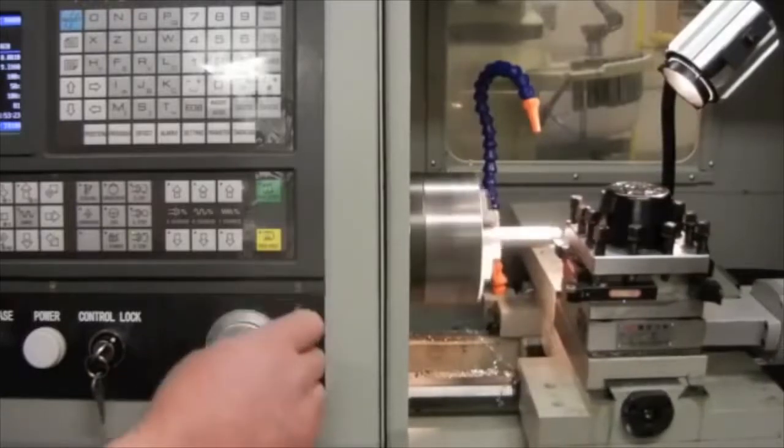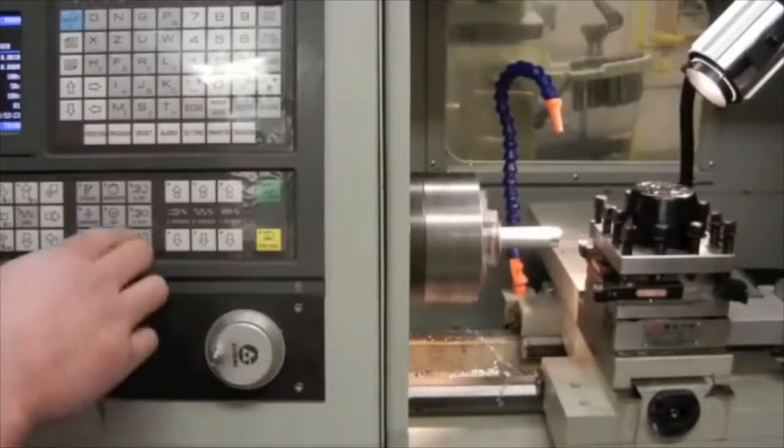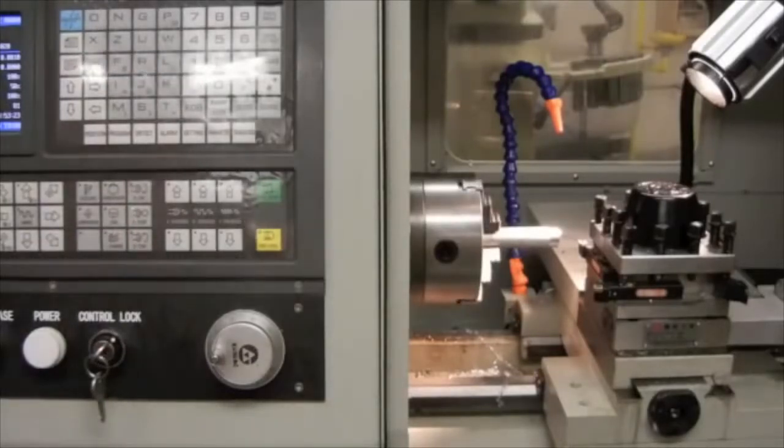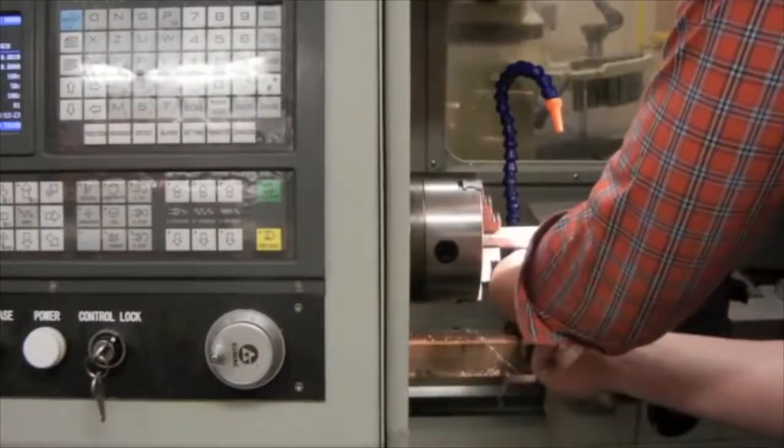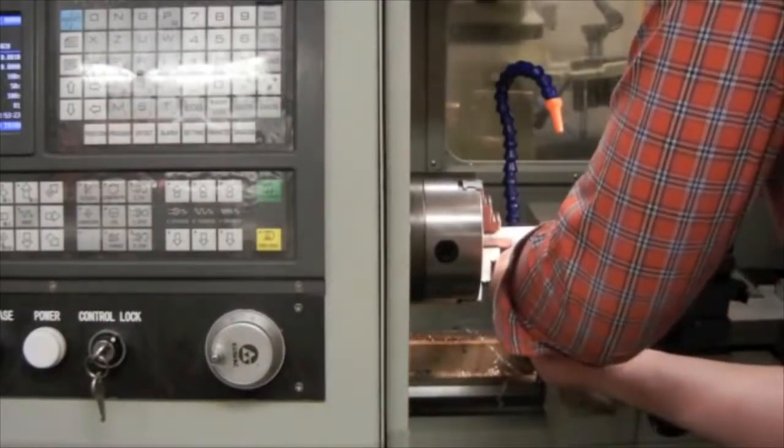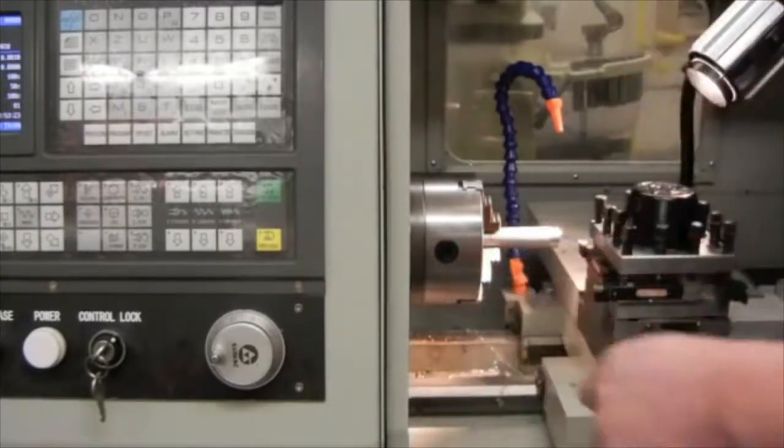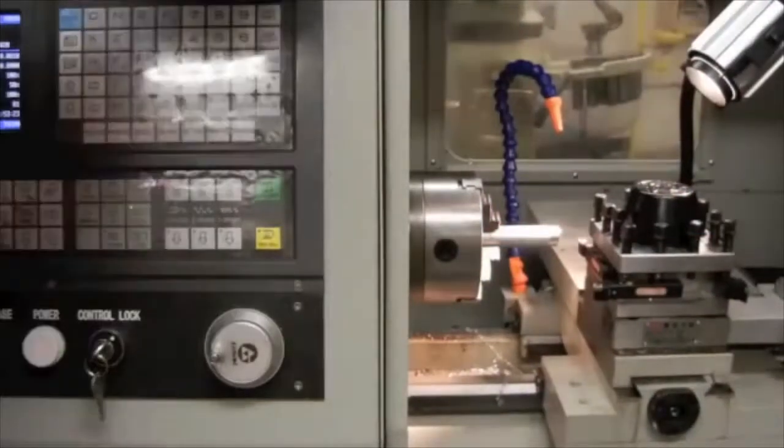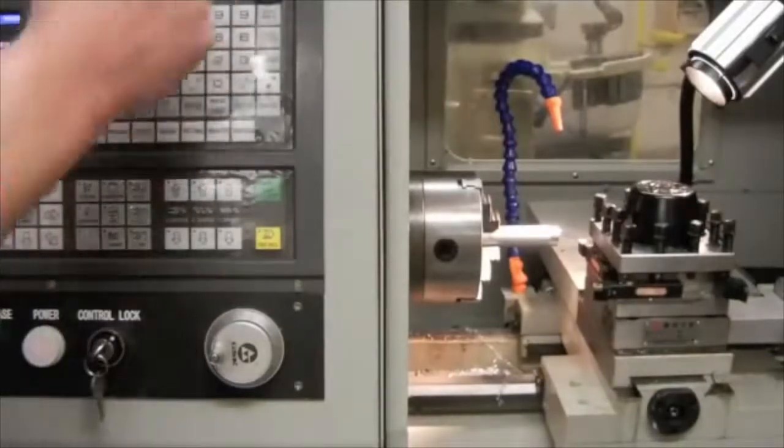When I exit the tool, I'm going to exit only on the X axis. Press spindle stop. I'm now going to use the micrometer to take a measurement on the part. I'm going to measure that turned area that I just spun. I'm going to write this measurement down. So I measured this at a current diameter of 0.9977.